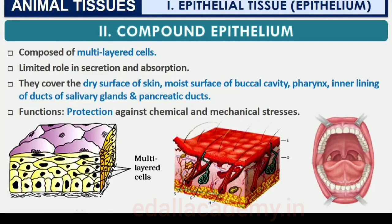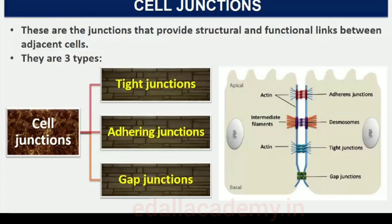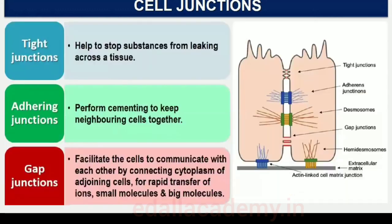Compound epithelium covers the dry surface of the skin, the moist surface of the buccal cavity, pharynx, inner lining of ducts of salivary glands and pancreatic ducts. Three types of cell junctions are found in epithelium and other tissues: tight, adhering, and gap junctions. Tight junctions help stop substances from leaking across a tissue. Adhering junctions perform cementing to keep neighboring cells together. Gap junctions facilitate cells to communicate by connecting the cytoplasm of adjoining cells for rapid transfer of ions, small molecules and sometimes large molecules.